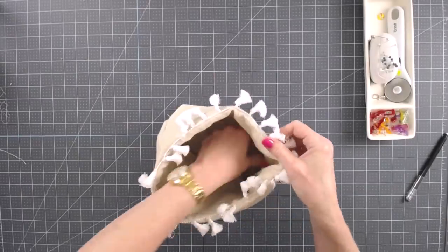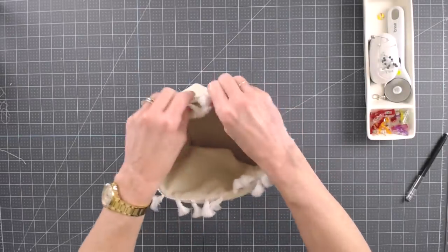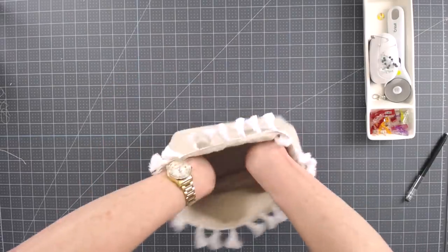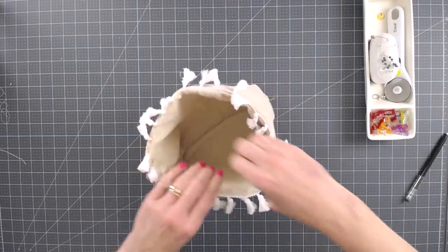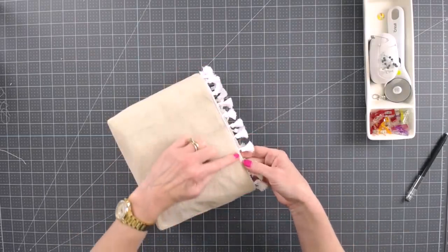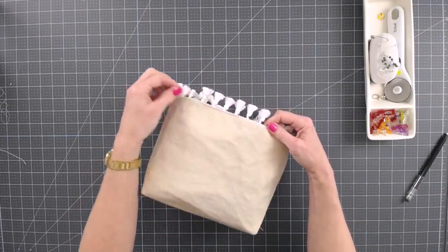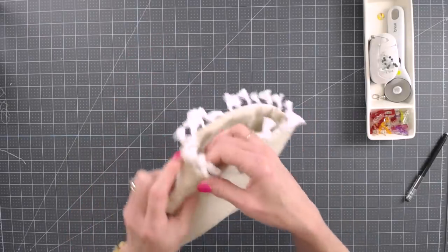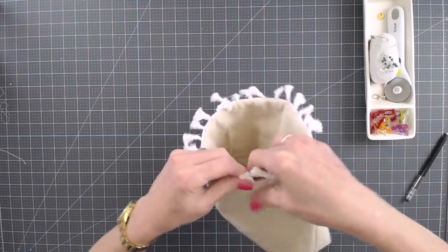You might want to take it to the iron, iron everything nice and flat again. That's why I like that stiff interfacing because it just stands up nicely by itself. So now you're going to take it back to the sewing machine and you're just going to give it a nice top stitch right along this top edge, just to keep that lining in place and keep everything looking nice and finished.